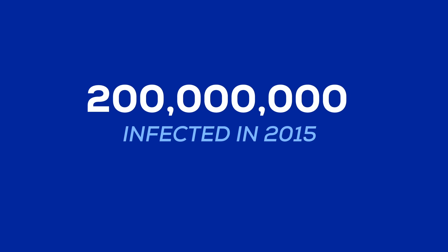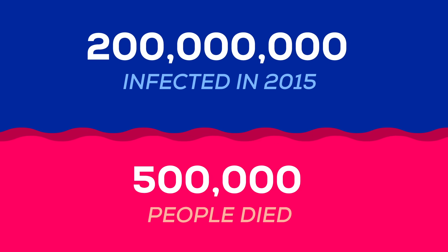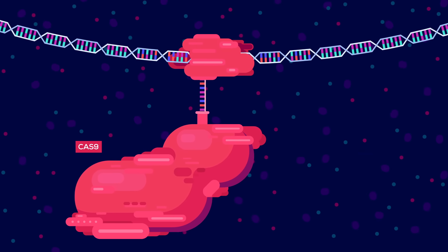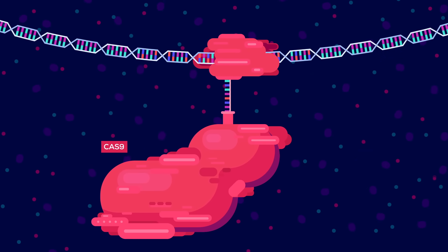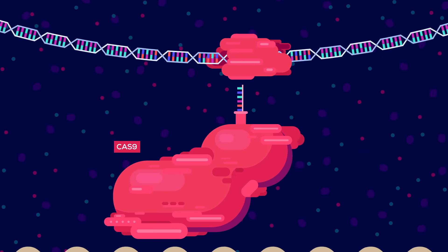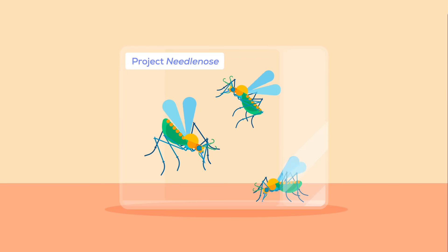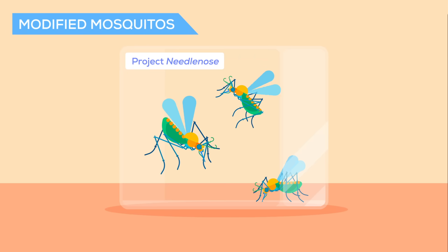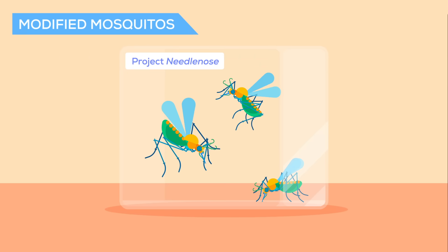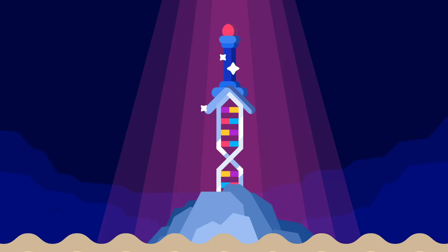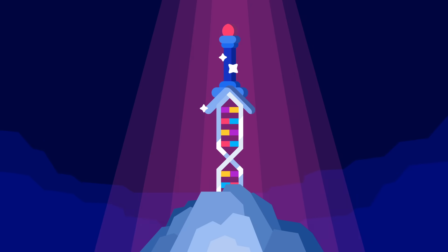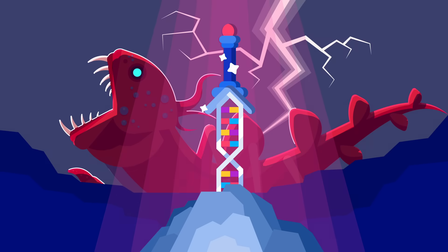In 2015 alone, hundreds of millions were infected and almost half a million people died. A new technology could help us eradicate malaria forever. But to do so, we need to engineer a whole animal population. This is not a hypothetical problem — the modified mosquitoes already exist in a lab. Should we use the technology? And is malaria bad enough to risk it?